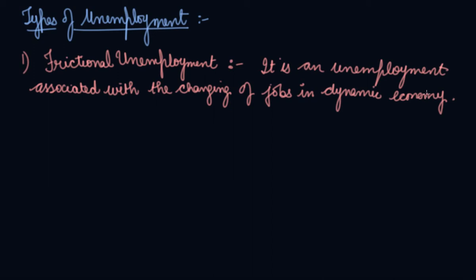Frictional unemployment arises due to the immobility of labour, shortage of raw materials, lack of information regarding opportunities of employment, shortage of power, wear and tear of machinery, tendency of the workers to move from one job to another, and search of remunerative jobs.